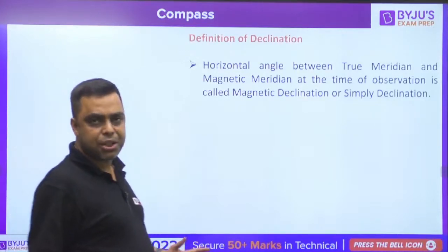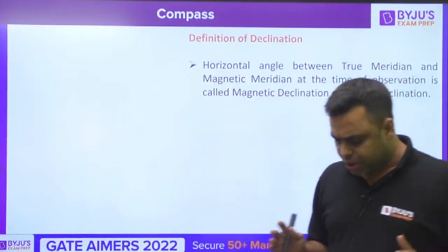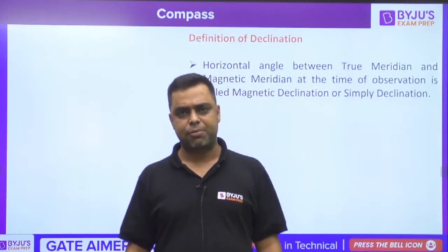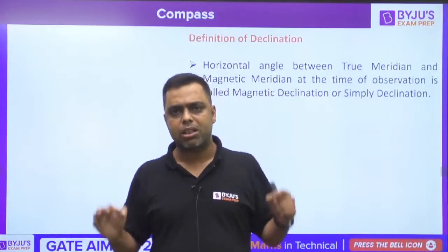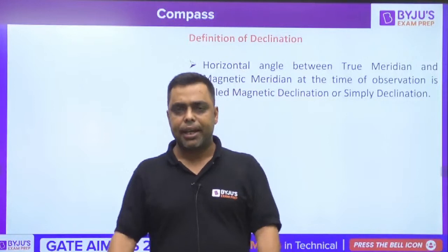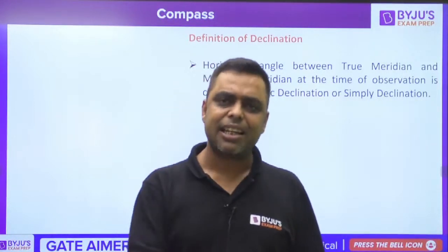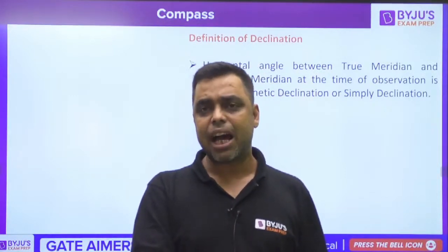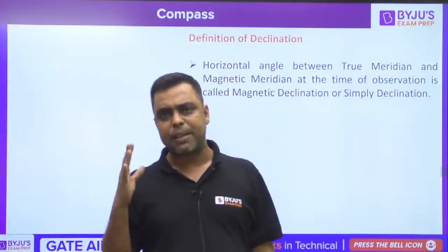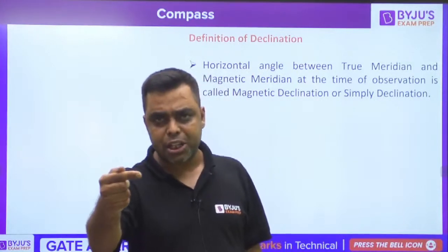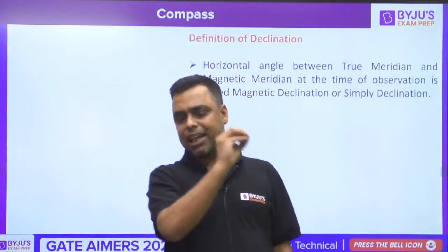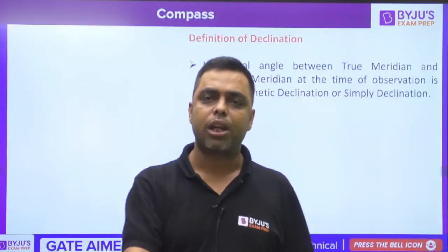So what is declination? First, let us understand the fundamental concept. Wherever you are standing is a particular significant point on the earth's surface. As you know, there is a north pole and south pole on the earth. If I draw a line joining the north pole and south pole through this point on the earth's surface, that line is called the true meridian.